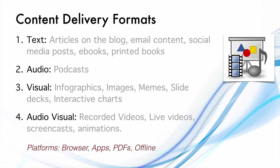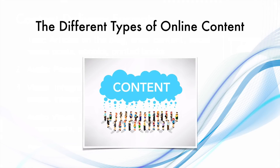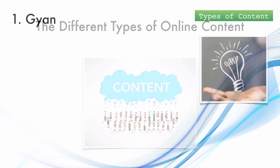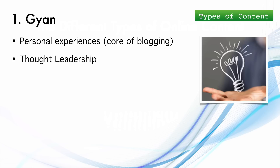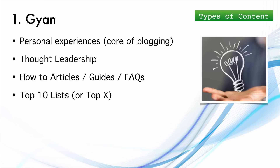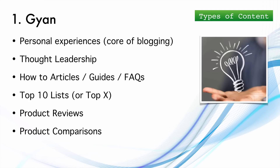Now let's explore each type in depth. Gyaan, the first type, includes personal experiences, thought leadership articles, how-to articles, guides, and FAQs. It can also include top 10 or top 7 lists, product reviews — which are a major part of affiliate marketing — product comparisons, and news. Many blogs and news websites publish news within a particular category.